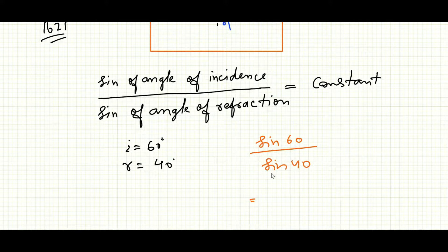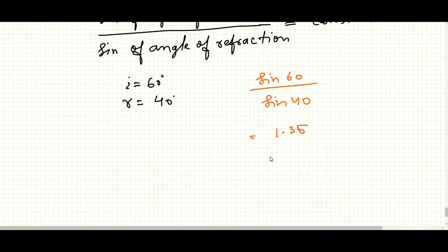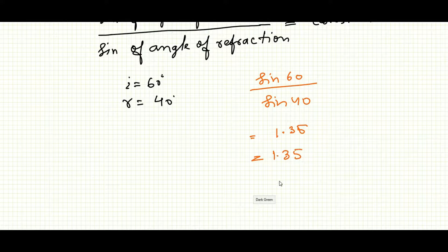So I can write 1.34 means we can write 1.35. And this is called refractive index. I will say refractive index of glass with respect to air.